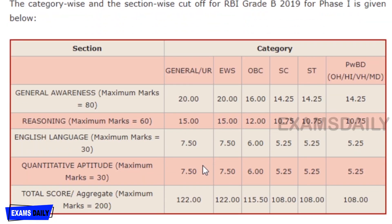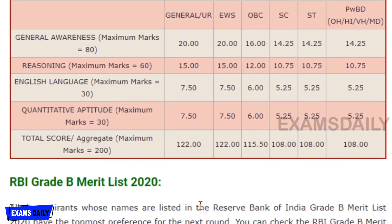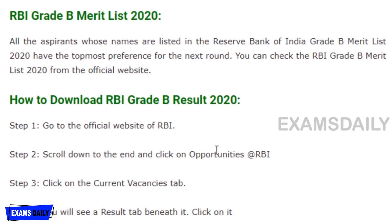The category-wise cutoff marks for RBI Grade B 2019 phase one are: General category — 122, EWS — 122, OBC — 115, SC — 108, ST — 108, and PWBD — 108. These are the cutoff marks for this recruitment process.